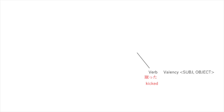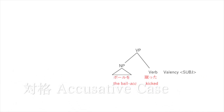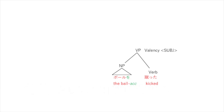Verbs combine with other things — they merge to give ourselves a verb phrase. Here's the verb phrase, and the verb merges with its object. The object is a noun phrase: boru o. The o here is accusative case — it marks the noun as an object. The object disappears from the valency list. We just have the subject, and now we're going to give ourselves a subject to make a sentence, which is a big verb phrase of course.